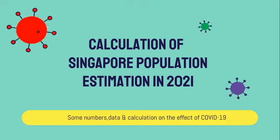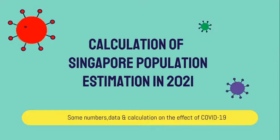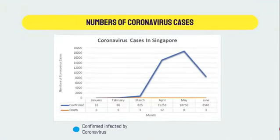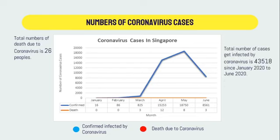Let's move to the calculation part — how to estimate Singapore's human population in year 2021. First, we have to gather related information. This is a graph showing coronavirus cases in Singapore. From January 2020 to June 2020, the total number of cases infected by coronavirus is 43,518, while the total number of deaths due to coronavirus is 26 people.